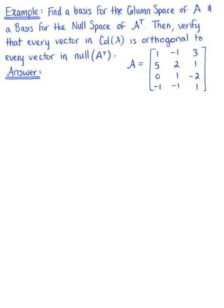Find a basis for the column space of matrix A and a basis for the null space of the transpose of matrix A. Then verify that every vector in the column space of matrix A is orthogonal to every vector in the null space of A transpose. We are given a 4 by 3 matrix A.